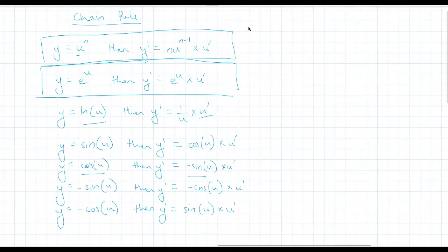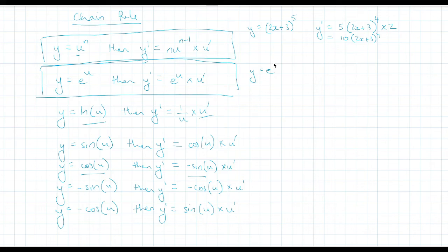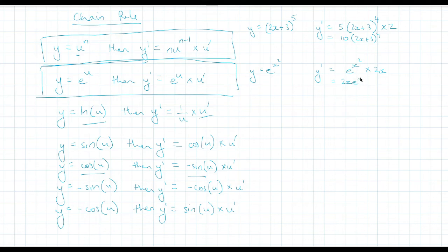Let's look at an example of each. Say you had y equals (2x + 3) to the 5 — y dash will be: first derive the power to get 5(2x + 3) to the 4, then multiply by the derivative of the bracket, which is 2. This simplifies to 10(2x + 3) to the 4. For the exponential example, if y equals e to the x squared, then y dash equals e to the x squared multiplied by the derivative of x squared, which is 2x. We can write this as 2x e to the x squared.